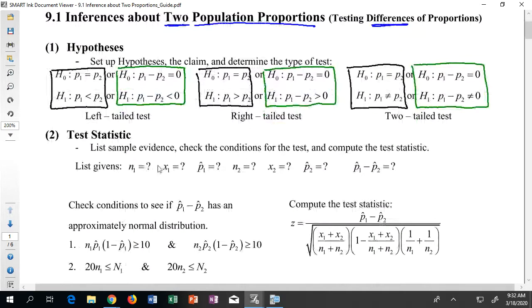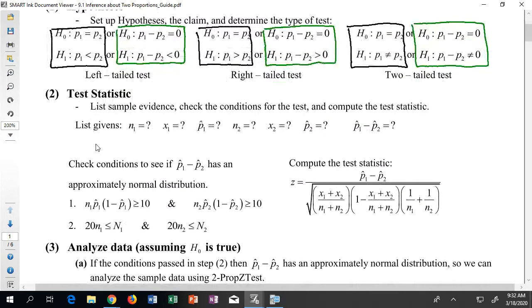Ultimately we're going to have the same basic sorts of steps. We're going to list out a bunch of evidence. Here though we're going to have two samples worth of evidence. So you'll see that I have an n, an x, and a p-hat but all with a subscript of 1 indicating that's for the first sample, and then I have the same stuff for the second sample.